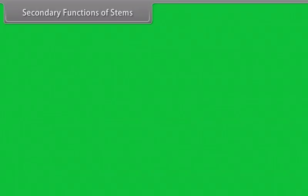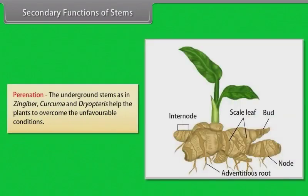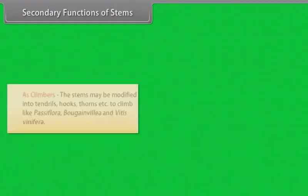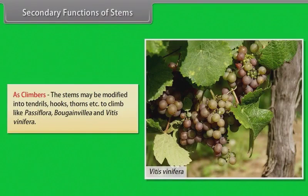Secondary functions of stems include: pernation — underground stems as in Zingiber, Curcuma and Dryopteris help plants overcome unfavorable conditions; storage of food — food is stored in parenchymatous cells and underground stems like Solanum tuberosum, Colocasia, and ginger; as climbers — stems may be modified into tendrils, hooks, thorns etc. to climb, like Passiflora, Bougainvillea and Vitis vinifera.